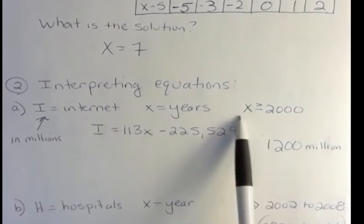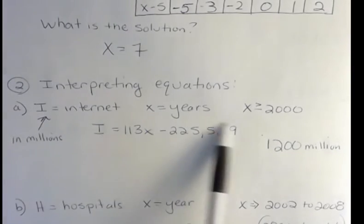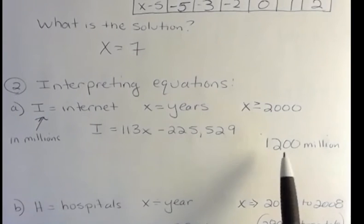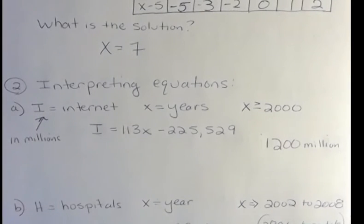And then they're saying that x also has to be greater than the year 2000 or equal to. It could be 2000 and up. So they're saying from 2000 on up, this is an equation that explains the number of internet users. And then they say, well, what year will it be 1,200 million people? That's the question.